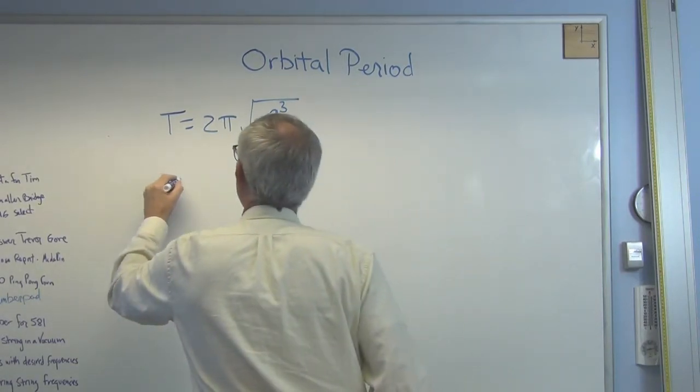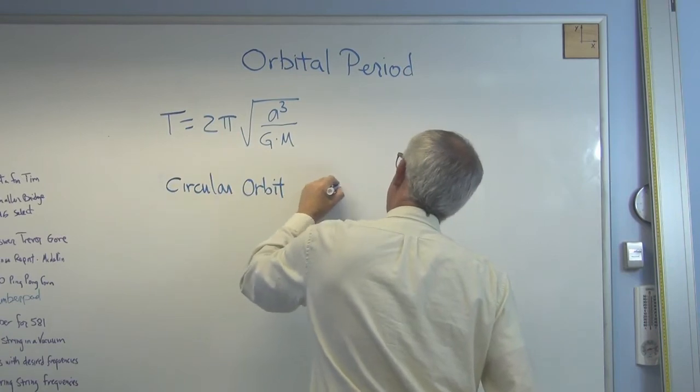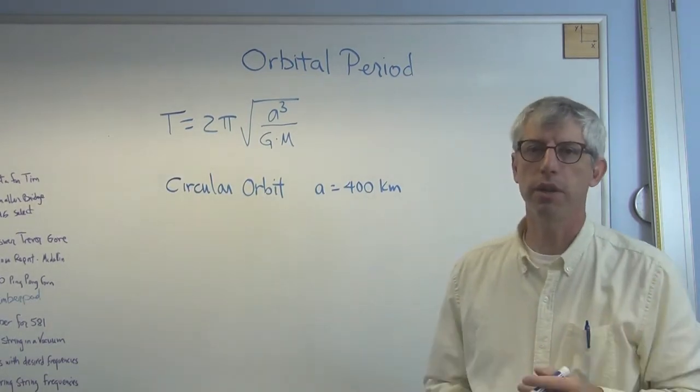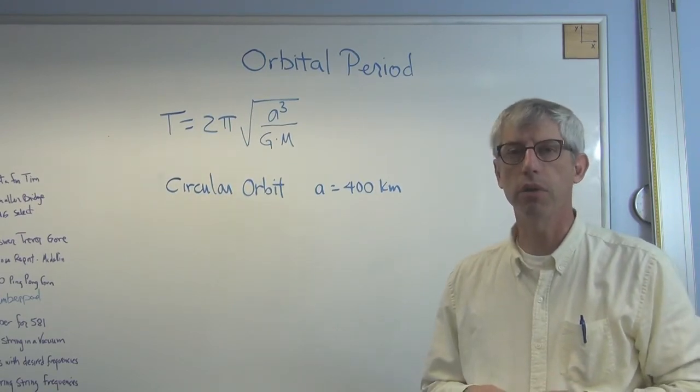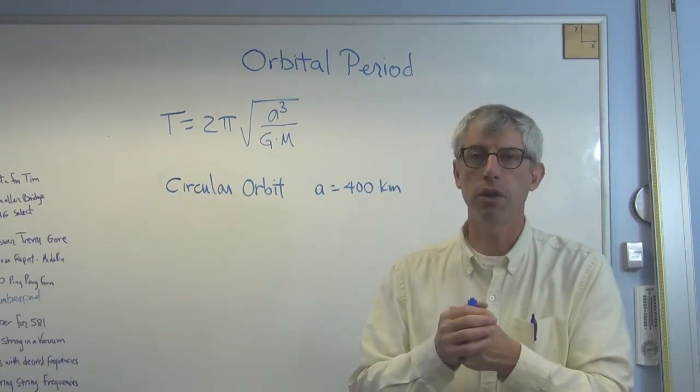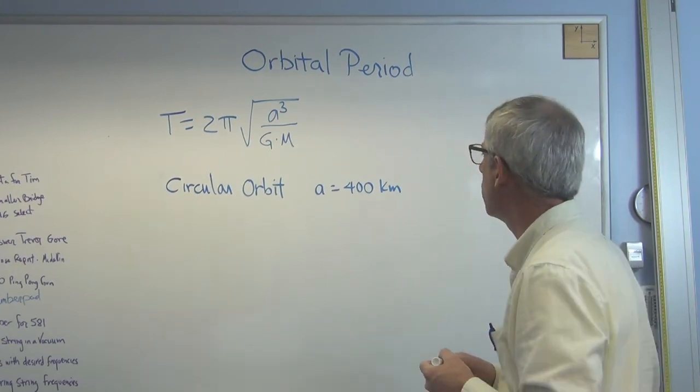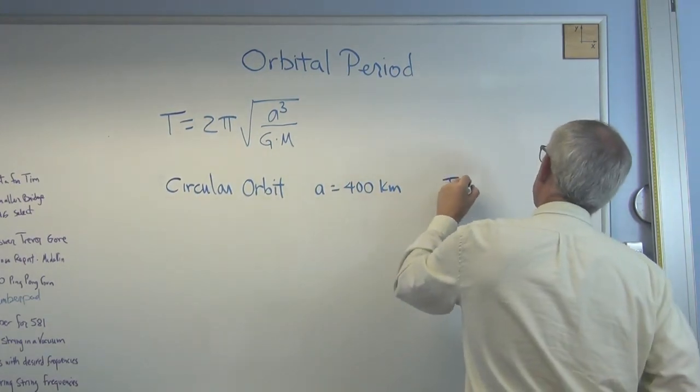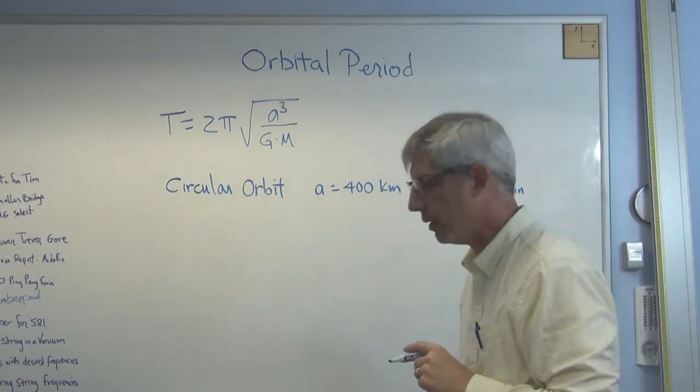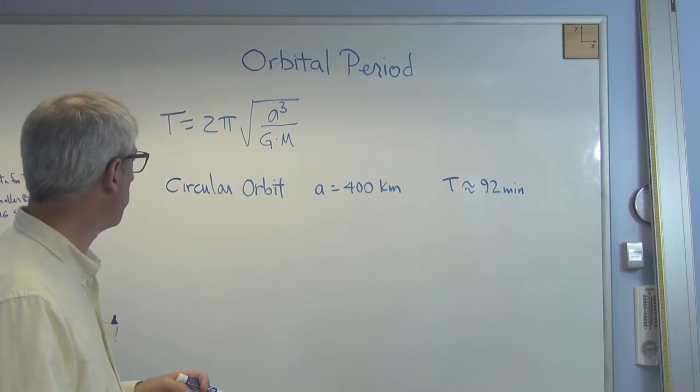So let's say we've got a circular orbit where A is 400 kilometers, which is obviously 400,000 meters. Now, this is one of these numbers I just happen to know. I was trained as an aerospace engineer. The period of a low Earth orbit is about 92 minutes. That means that a satellite or space station or whatever is going around the Earth. It's in the dark 46 minutes behind the Earth, and it's in the sunlight 46 minutes. So we know that the period is somewhere in the neighborhood of 92 minutes. That's the answer we're expecting.